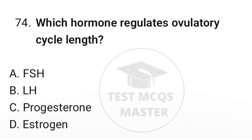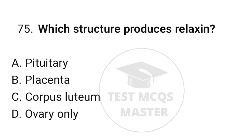Question number seventy-four: which hormone regulates ovulatory cycle length? The correct option is C, progesterone. Question number seventy-five: which structure produces relaxin? The correct option is C, corpus luteum.